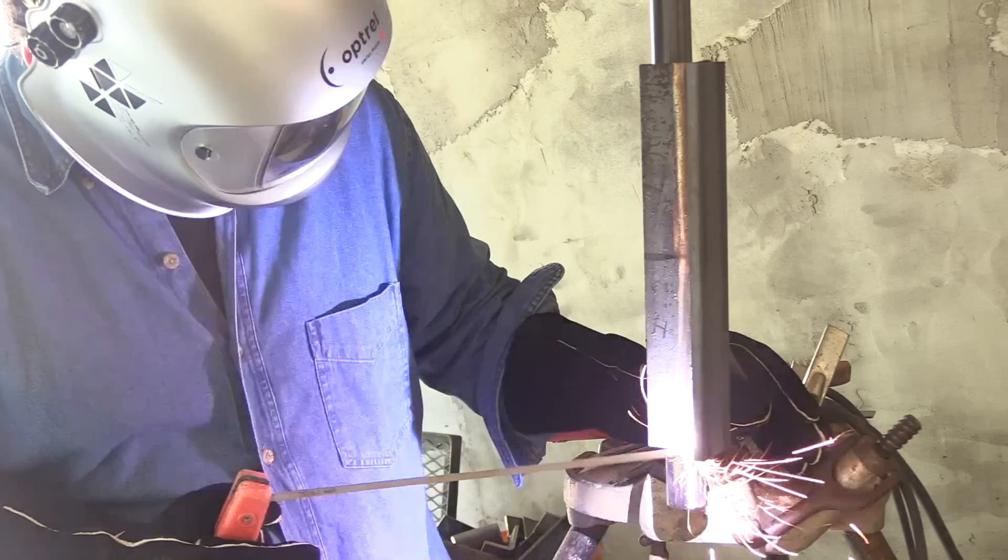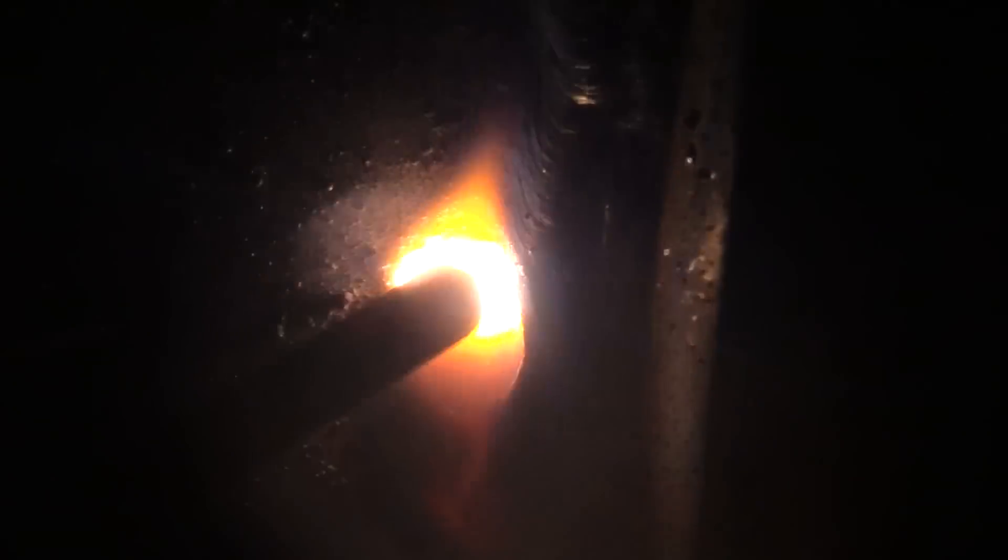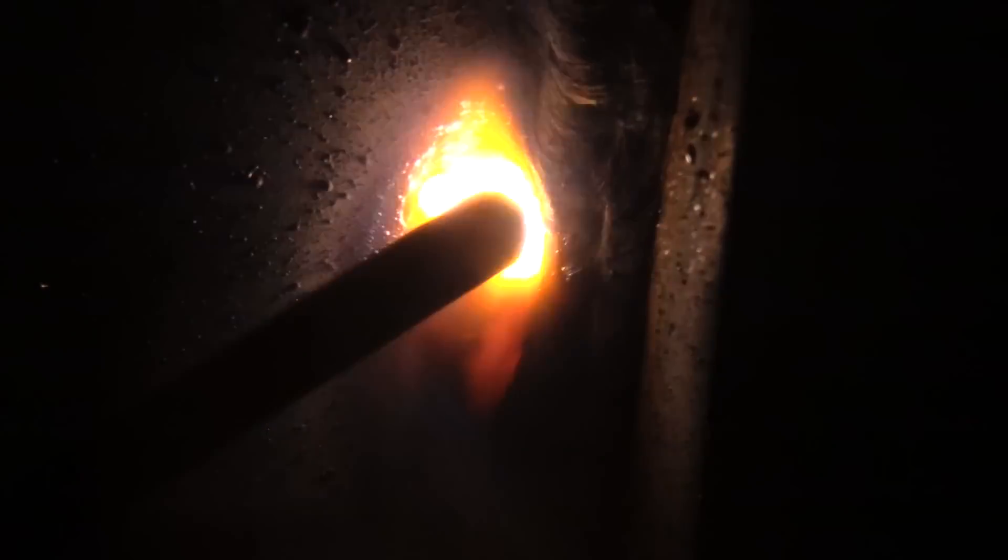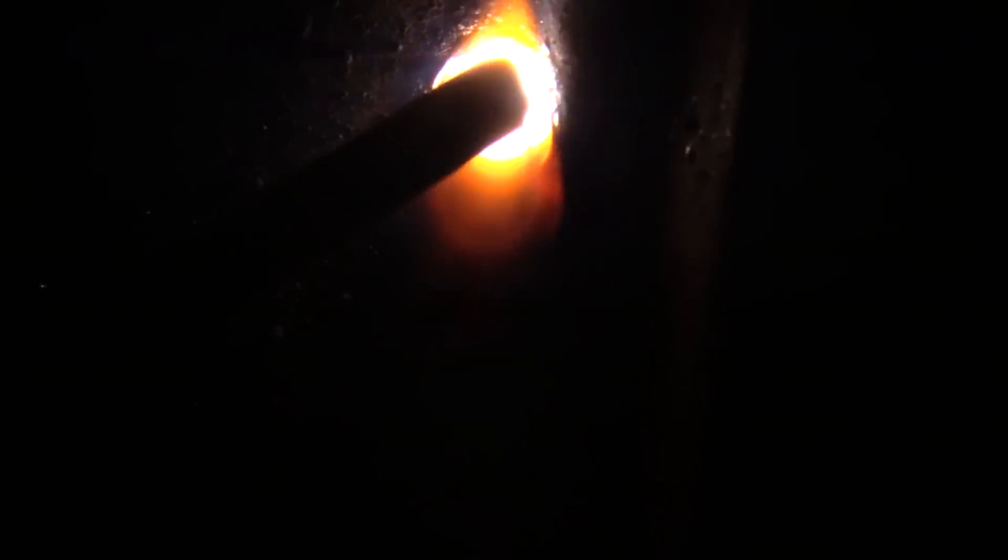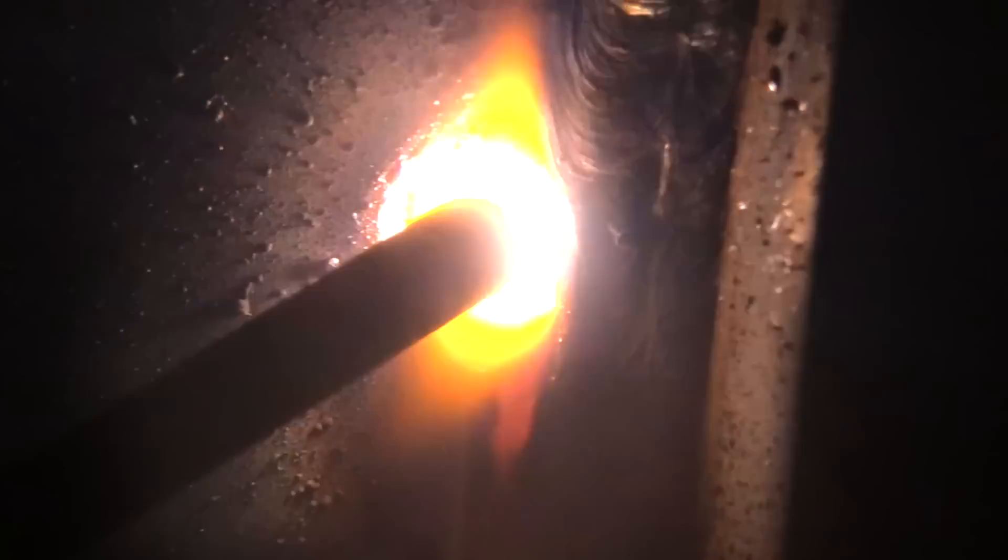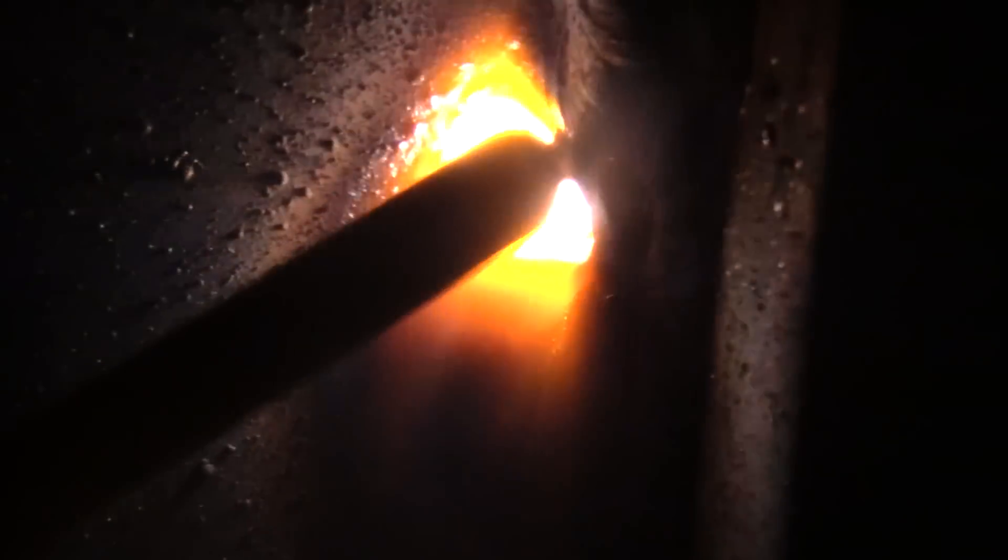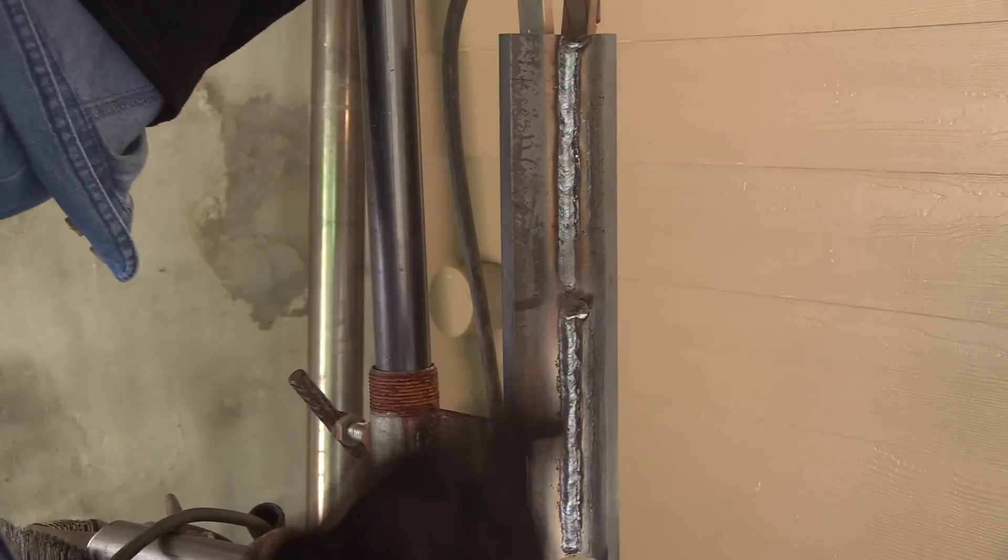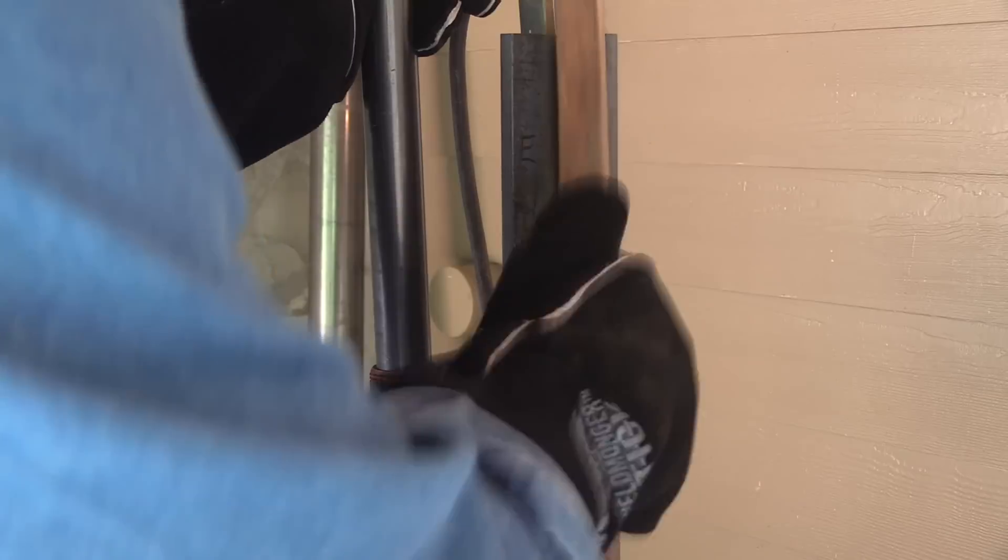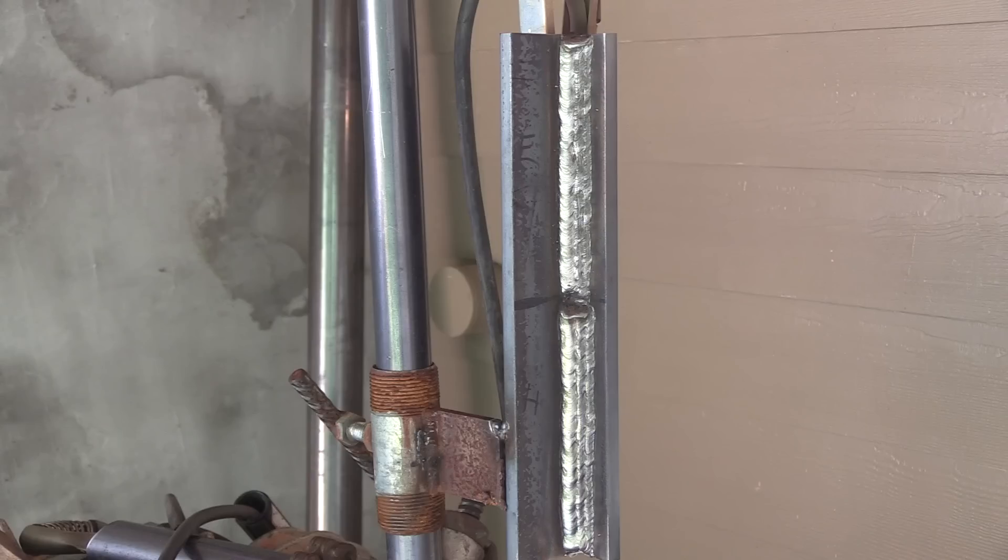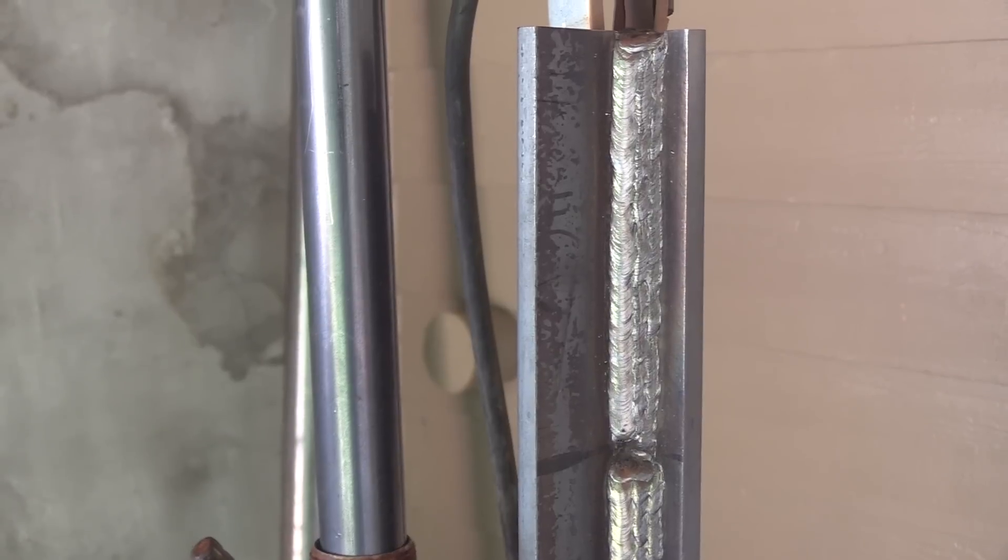All right, I'm overlapping that previous bead by half, at least I'm trying to. And then this third bead, I'm taking a look at the left hand side, trying not to leave any undercut there. And of course, it does help to have the mill scale cleaned off to prevent undercut. Yes, stick rod will definitely burn through mill scale, but you're a whole lot likelier to have undercut if you have mill scale on there.